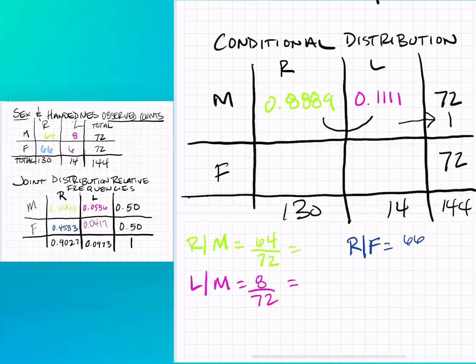And then we have right-handed given that they're female, and the observed count for that cell was 66. Again that's conditionally, or the condition there is that they're female, and so our total is 72, or that's our denominator.